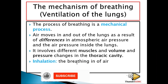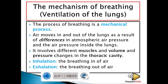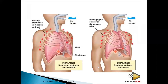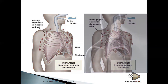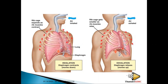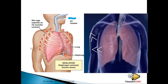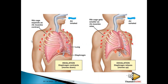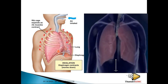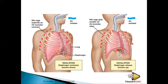Inhalation means breathing in, and exhalation means breathing out. During inhalation, the diaphragm contracts and moves downwards. The rib cage moves out and upward. The air will not come in unless these muscles have acted — the ribs go out and up while the diaphragm goes down.